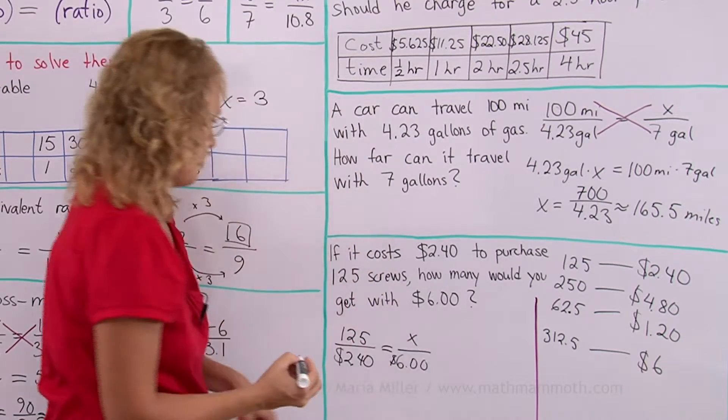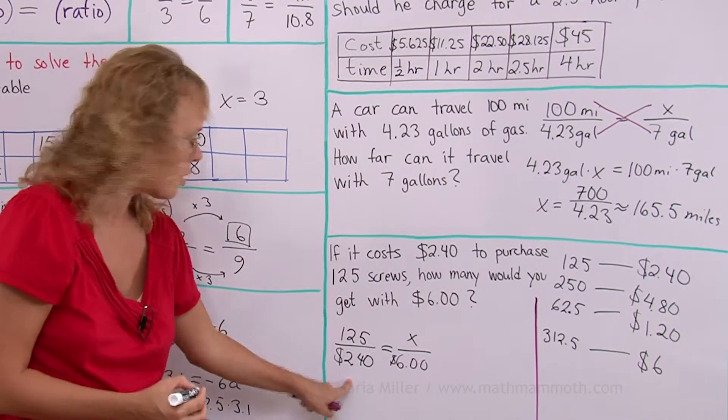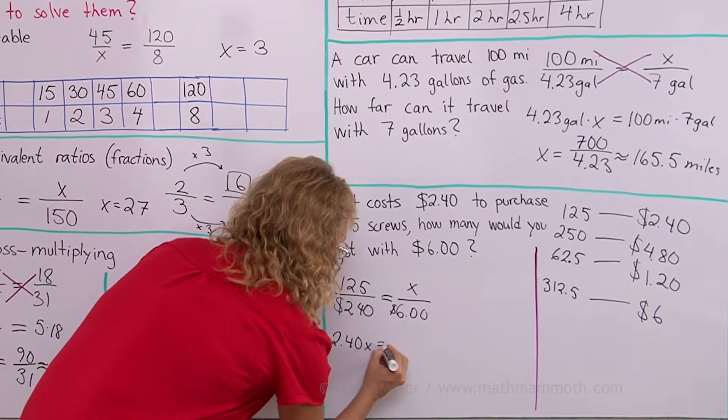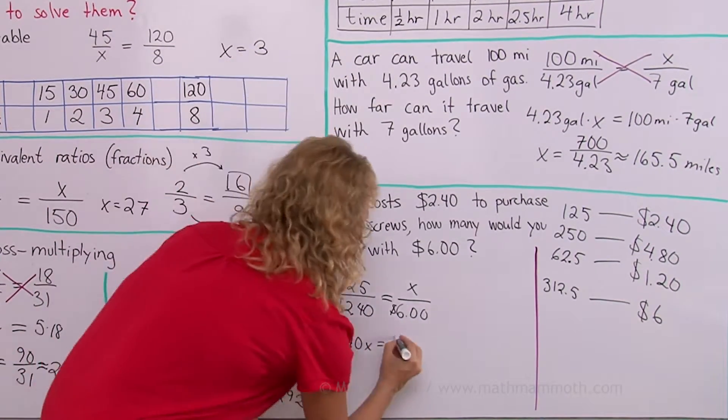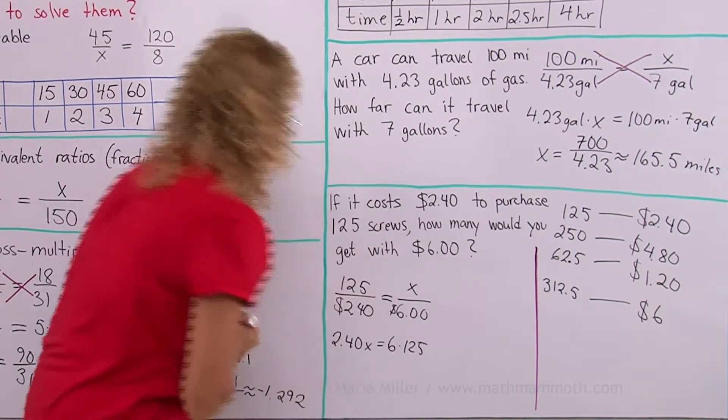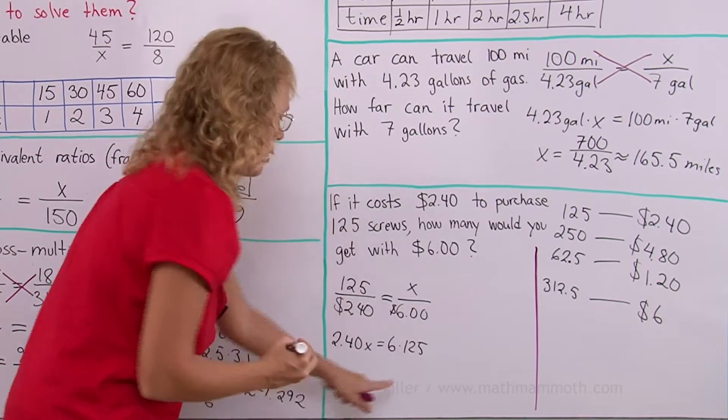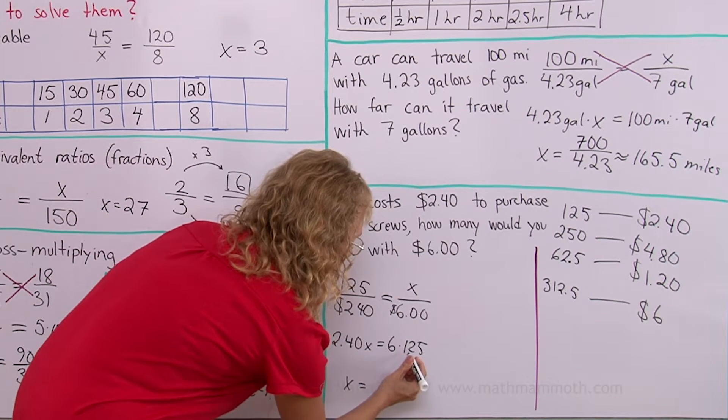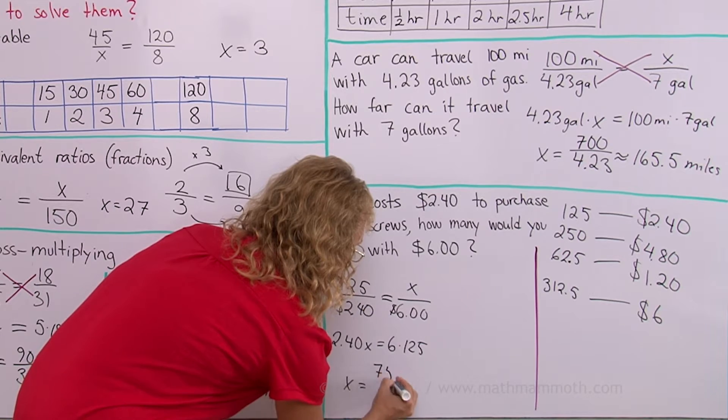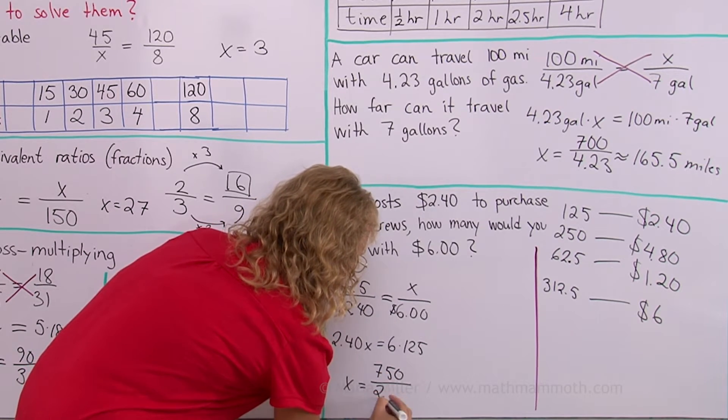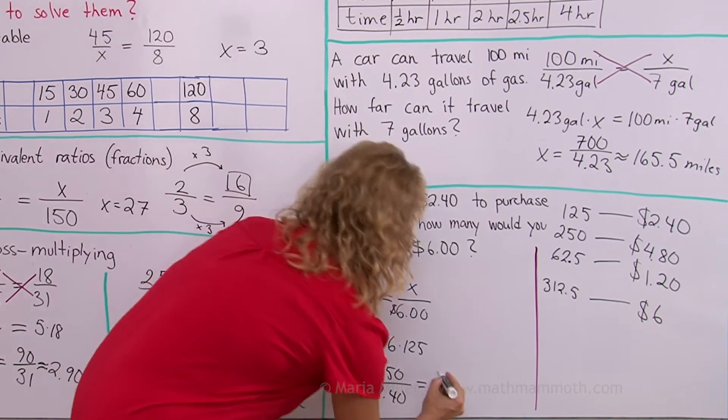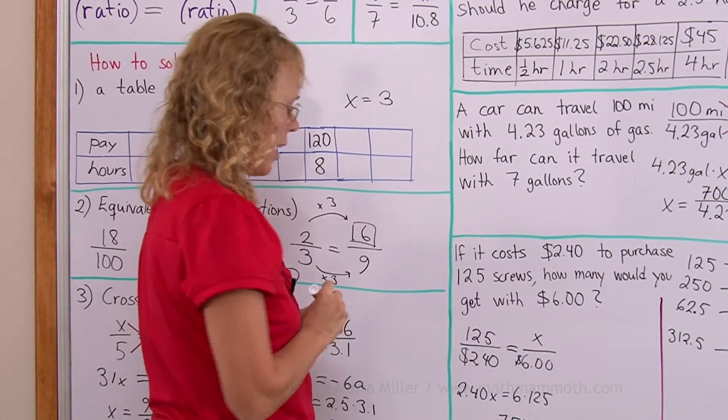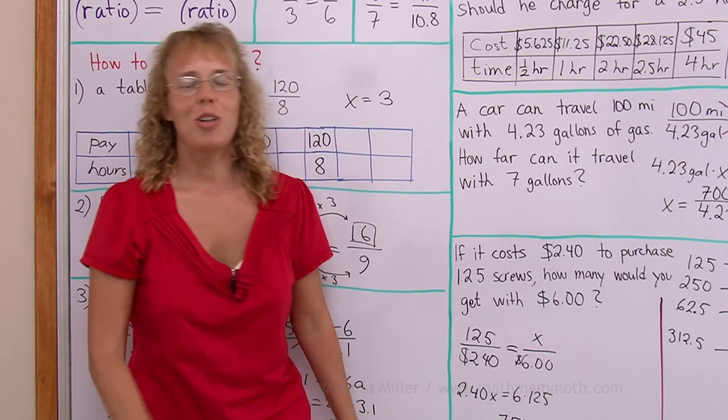And then your unknown. So I will cross multiply 240 times x equals 6 times that. And now x equals that number which is 750 divided by 2.40. And you should get the exact same answer of course. Okay we're all done and I hope this was helpful.